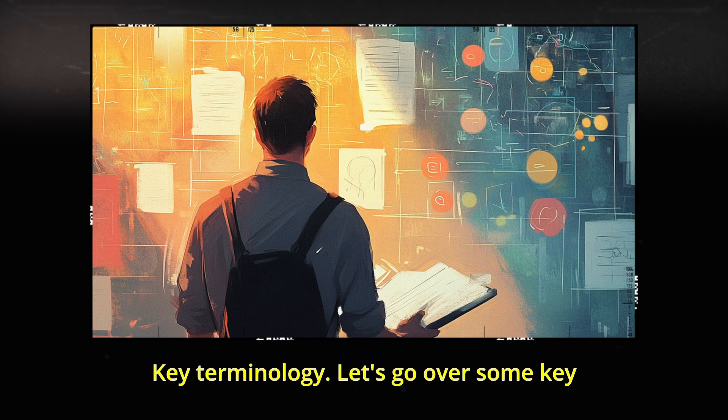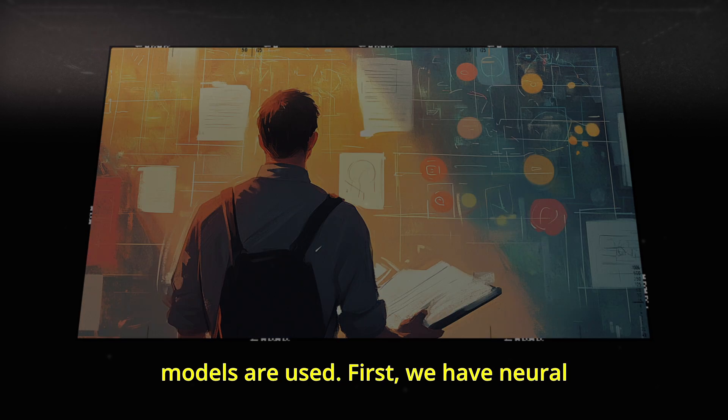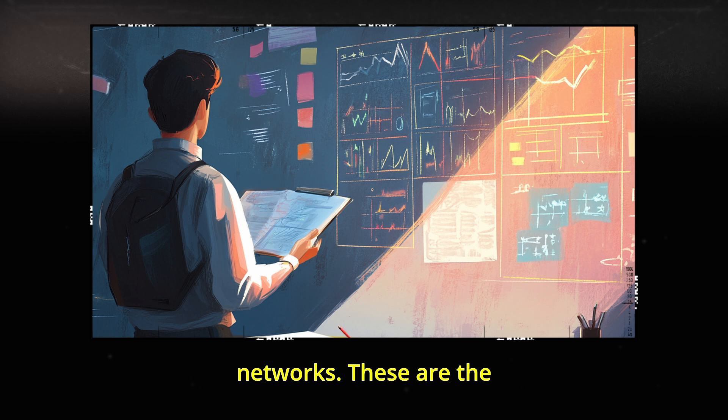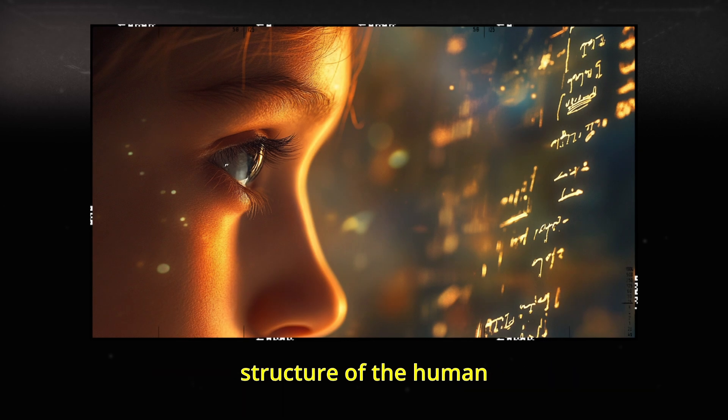Key terminology. Let's go over some key terminology that will help you grasp how machine learning models are used. First, we have neural networks. These are the backbone of many machine learning models. This structure is inspired by the structure of the human brain.